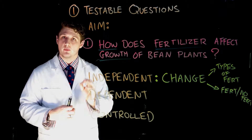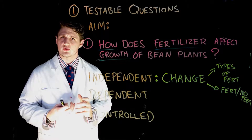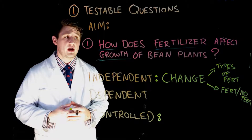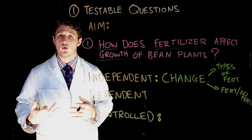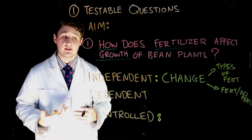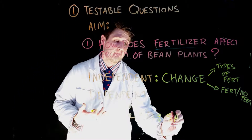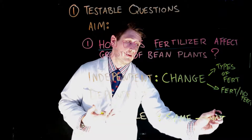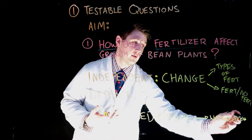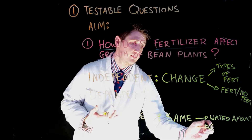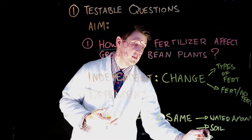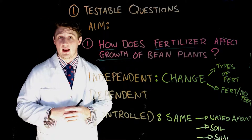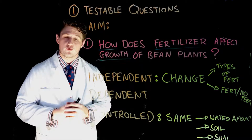Whatever we change, we're only going to change that one thing, which means we have to control some other things — that's where our control variables come in. For example, we can't change the type of fertilizer and then water them all different amounts; water has to stay the same. Control variables include the type and amount of water, the amount or type of soil, the amount of sun exposure, and even the amount of time you talk to that plant — all kept the same.